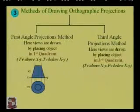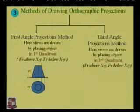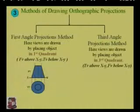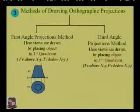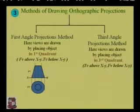In the first angle projection method, the front view is always above the x-y line and the top view is always below the x-y line. The symbolic representation of the first angle projection method is used to identify which method is being applied.